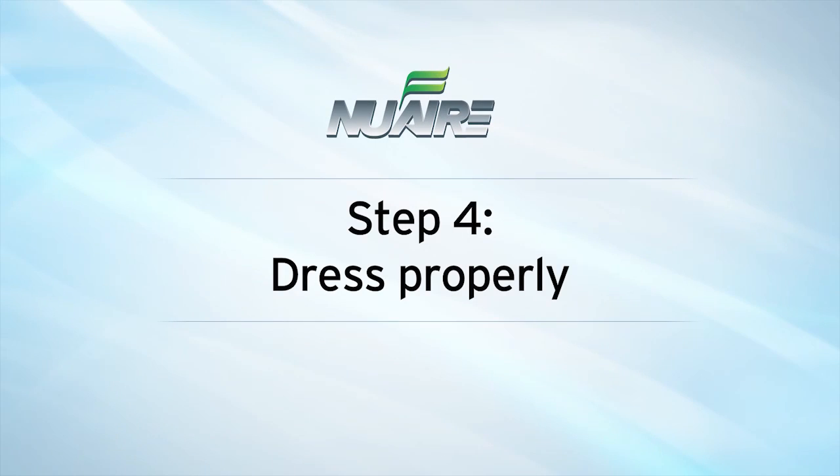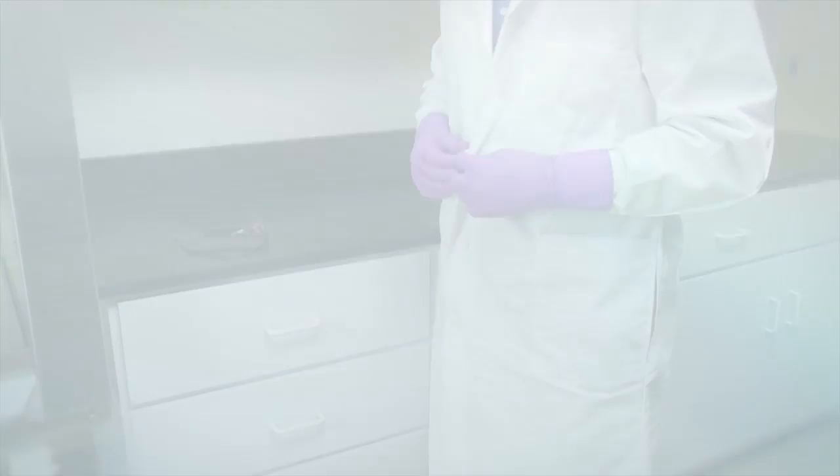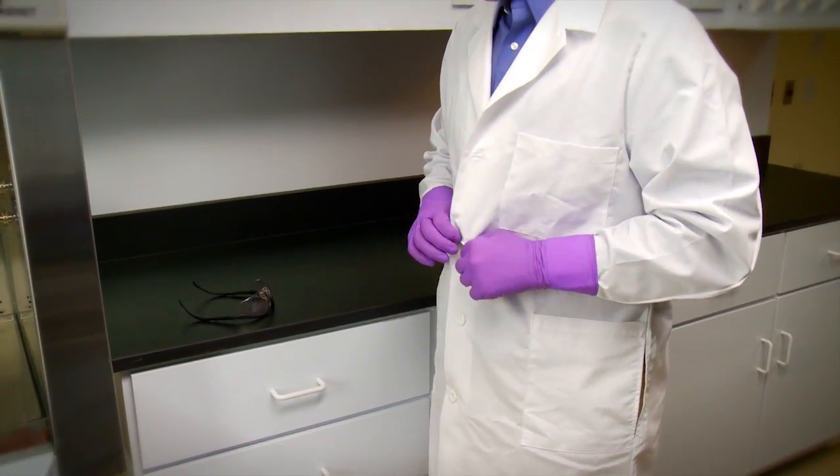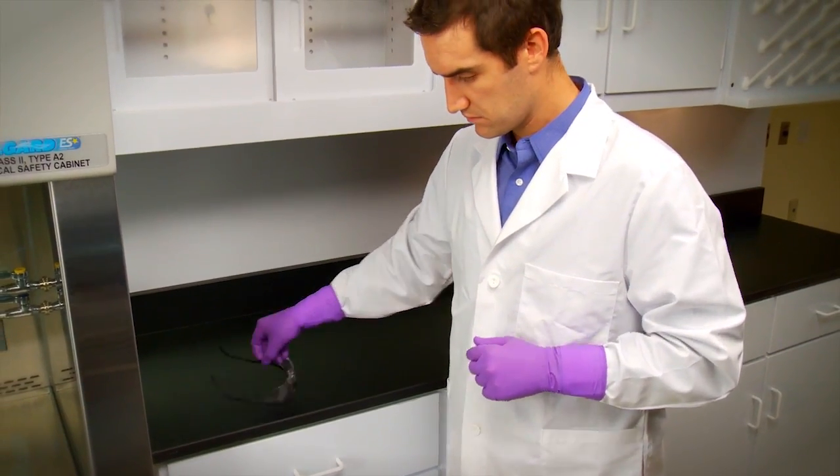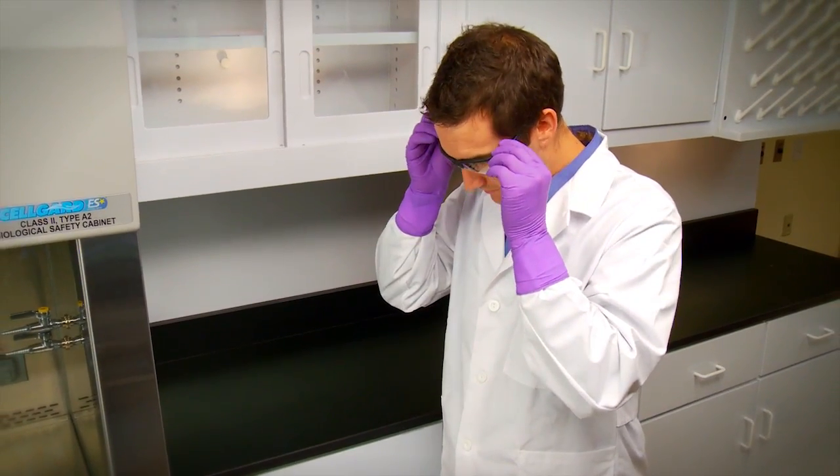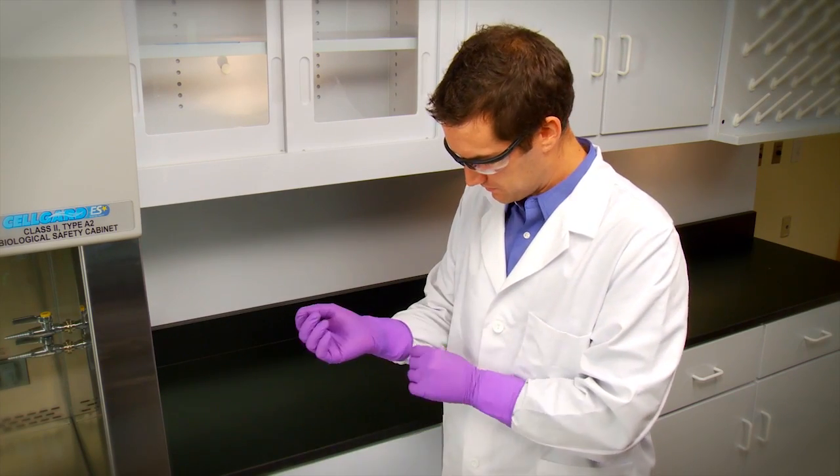Proper dress is another essential for protection of personnel, product, and the environment. Laboratory coats should be worn buttoned over street clothing. Protective eyewear should be on at all times, and latex or nitrile gloves are necessary when handling culture, contaminated surfaces, or equipment.